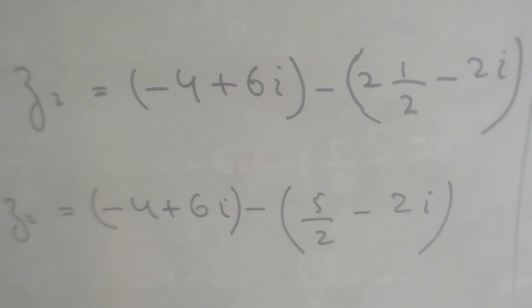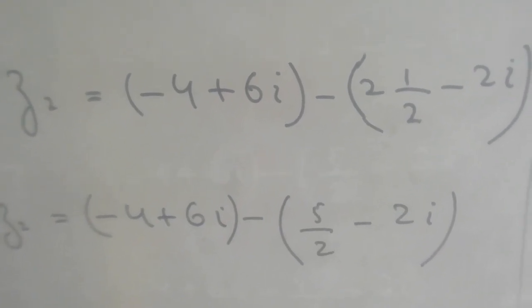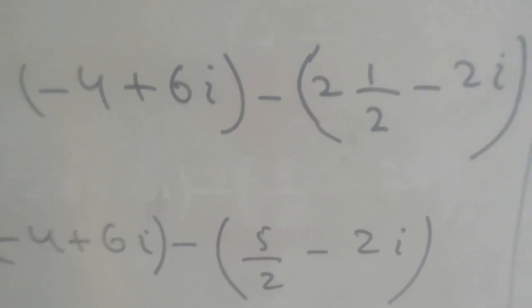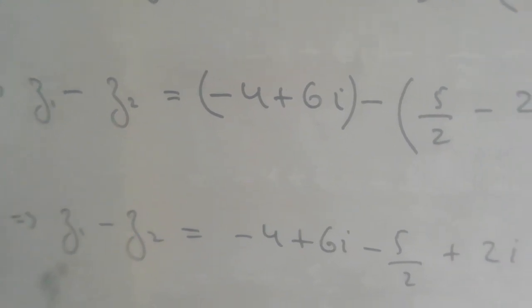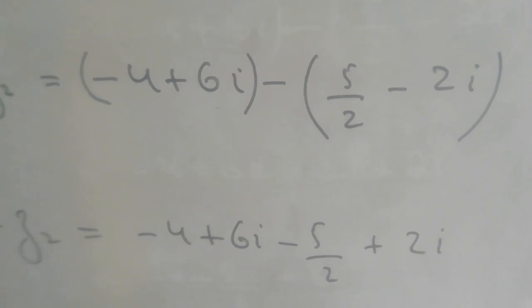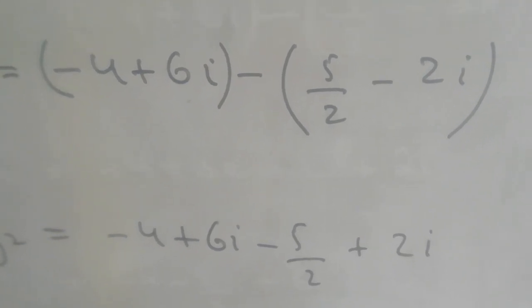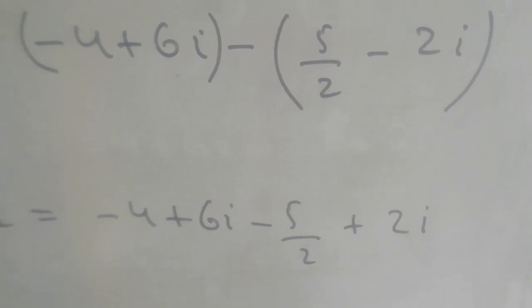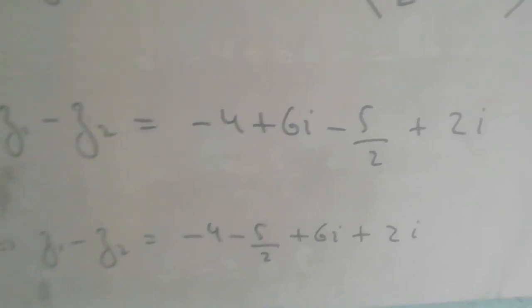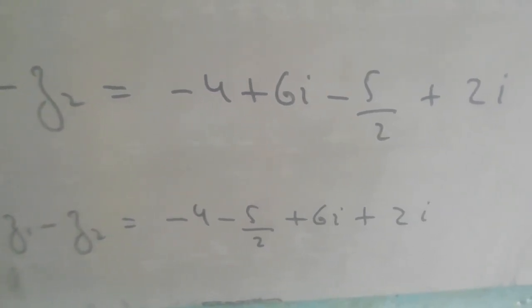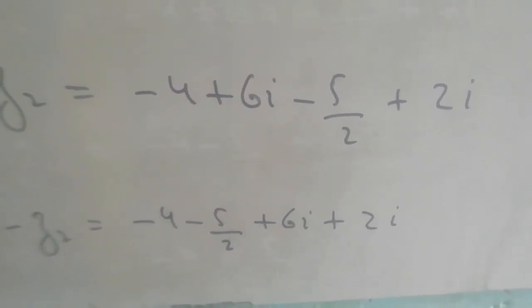After putting values: the brackets are removed. We have minus 4 plus 6 iota minus bracket 5 upon 2 minus 2 iota. So minus plus minus 5 upon 2, and minus minus plus 2 iota. Collecting constants: minus 4 minus 5 upon 2, and iota terms: plus 6 iota plus 2 iota. LCM gives minus 13 upon 2, and 6 plus 2 equals 8 iota.